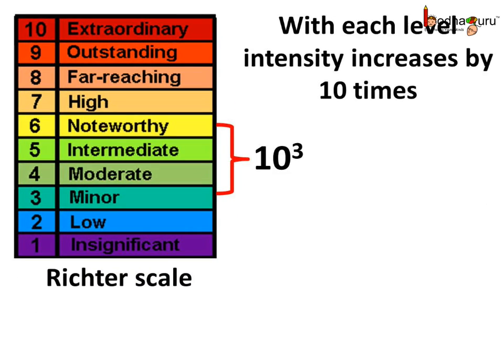Talking about earthquakes, the intensity of earthquake is measured in the Richter scale, and it consists of up to 10 levels or 10th scale. If the reading increases by one mark, it means the earthquake is 10 times stronger than the previous mark. For example, a 4 magnitude earthquake is 10 times stronger than a 3 magnitude earthquake.